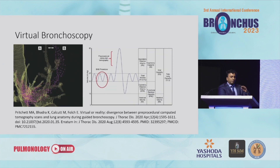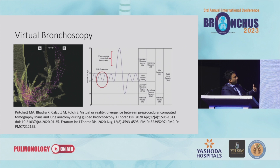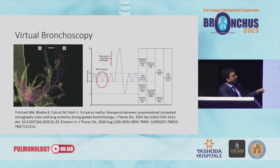When we talk about virtual bronchoscopy and this discrepancy of CT to body divergence — when we were talking about that CT scan, a patient would take a big deep breath in and hold it at ideally total lung capacity, but patients don't always follow directions. As a result, they end up being in the inspiratory reserve volume.